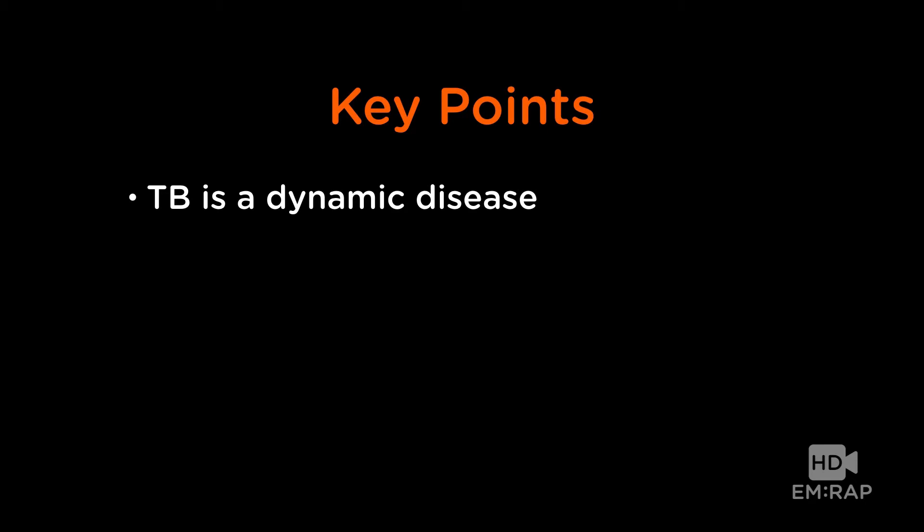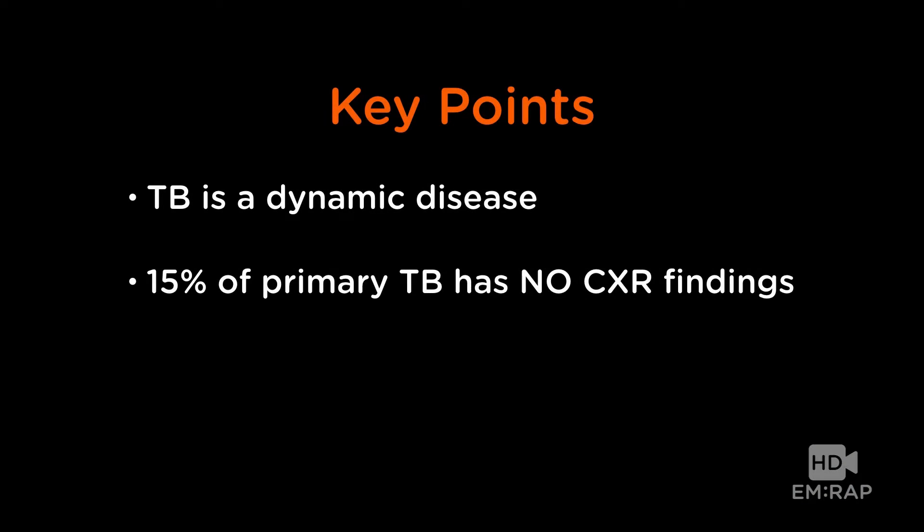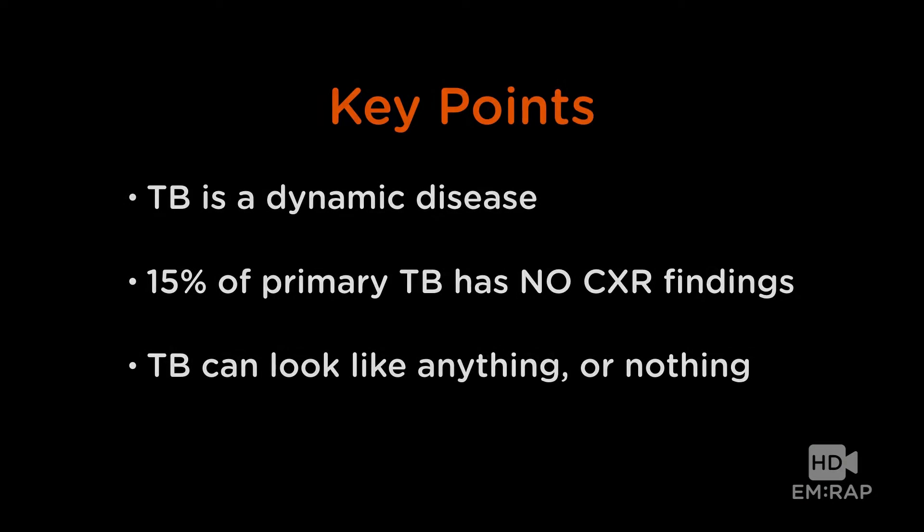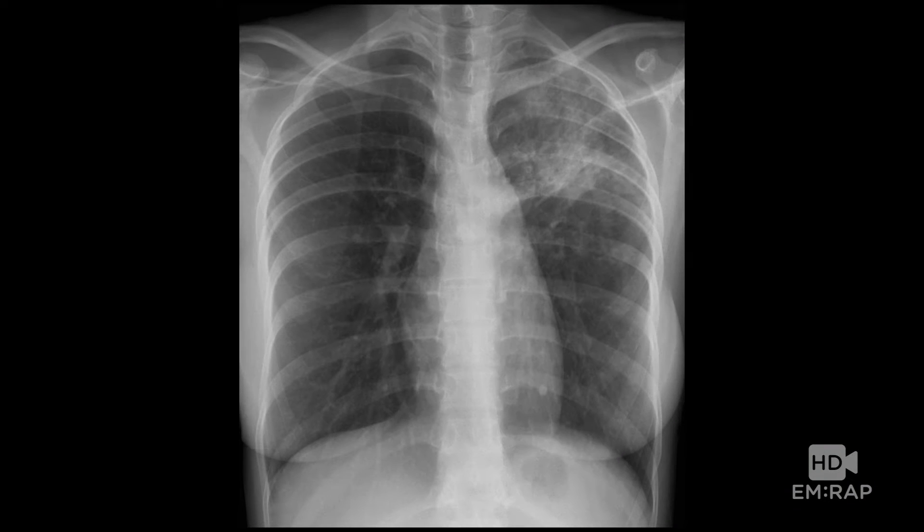The key points I wanted to make: TB is a dynamic disease. You get infected, some stuff might happen, then you go into a latency phase and it might come back. There are different classic manifestations on the chest x-ray at various times. About 15% of the time when you first get infected with tuberculosis you'll have no chest x-ray findings — it may be even higher in some HIV populations. TB can pretty much look like everything, as I was told by my radiology attendings 35 years ago.